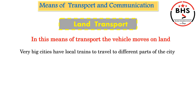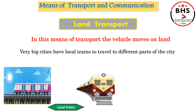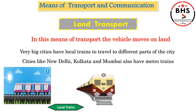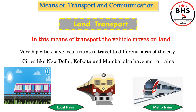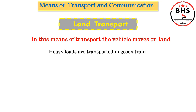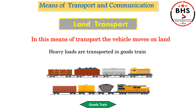Very big cities have local trains to travel to different parts of the city. We can see local trains in Mumbai. Cities like New Delhi, Kolkata, and Mumbai also have metro trains, which have a higher speed than other trains. Heavy loads are transported in goods trains — if we want to transport something heavy, a goods train is used as a means of transport.